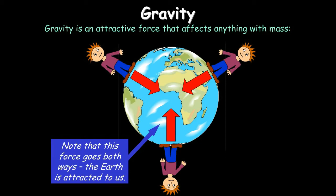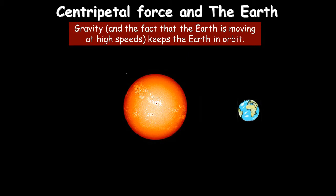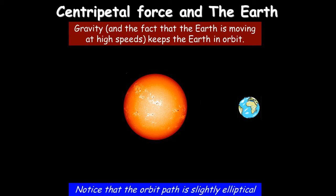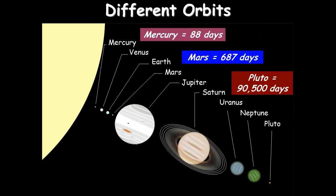Gravity is the attractive force affecting everything in the universe. The Earth moves at high speed but gravity pulls it toward the Sun; it doesn't get closer — it moves in a circular (actually slightly elliptical) orbit, so the force varies slightly. Different planets have different orbit times: Mercury takes only 88 Earth days to orbit the Sun, while Mars and Pluto take much longer because they have further to travel and move at slower speeds.